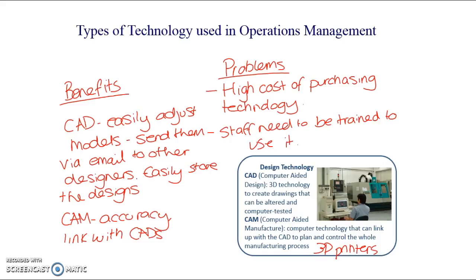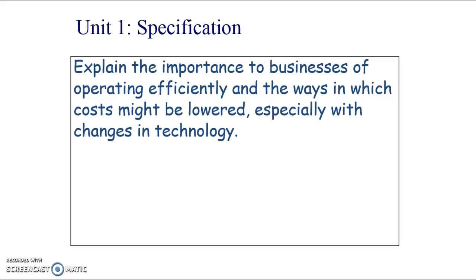Design technology — computer-aided design — allows you to easily adjust models, turn them into 3D models, rotate them, store designs, and email them to collaborators. Compared to old hand-drawn designs that used to be common in manufacturing, computers give a greater level of accuracy and adaptability. You can link these designs up with manufacturing via 3D printers, giving a high level of accuracy in the final product. However, staff will need to be trained to use it, and it is expensive to purchase.